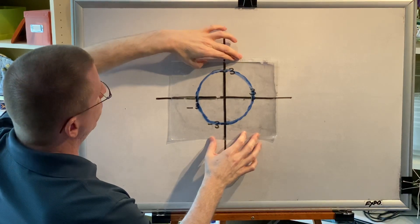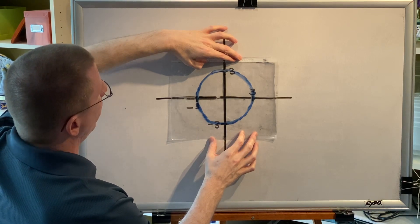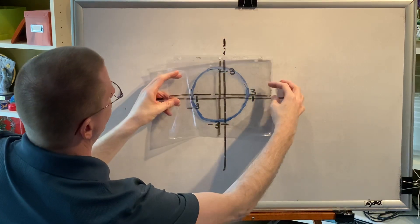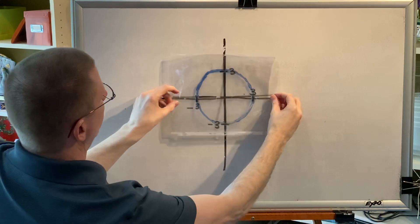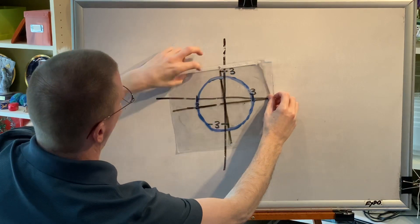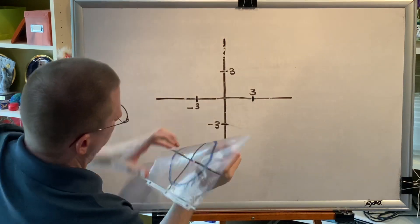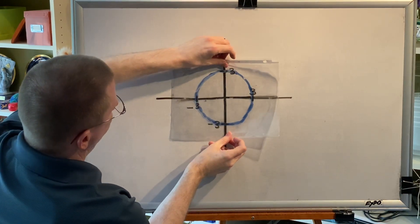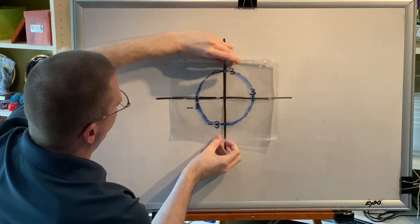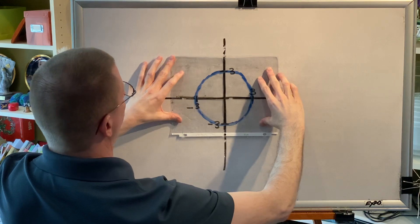It turns out that circles centered at the origin have x-axis, y-axis, and origin symmetry — all three. This is the before, and when we test for x-axis symmetry and spin it around the x-axis, this is the after — same picture. When we test for y-axis symmetry, we spin it around the y-axis — before, after, same picture. And when we spin it around the origin — before, after, same picture.